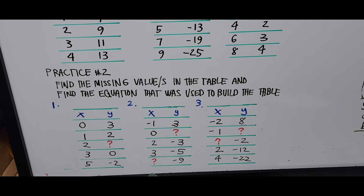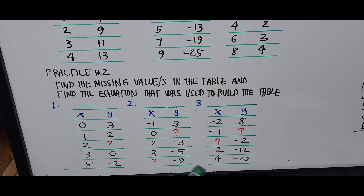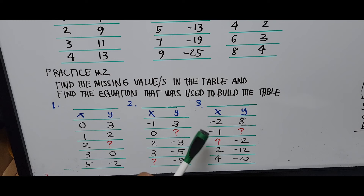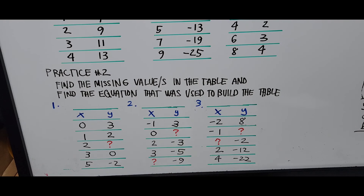On number two, you have two missing values in the table — find those and find the equation of the line that was used to build this table as well. On number three, you also have two missing values in the table and you need to find the equation of the line that was used to build this table. That will be all for your practice for lesson 12, input and output tables.